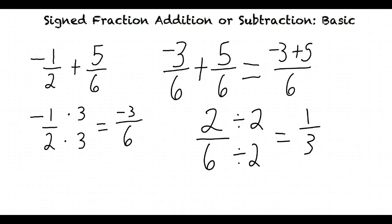So, to add fractions: first we get a common denominator, then we add the numerators while keeping the denominators the same, and then we simplify.